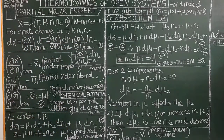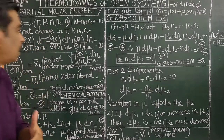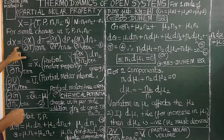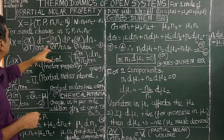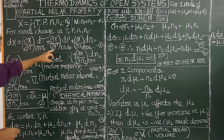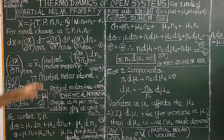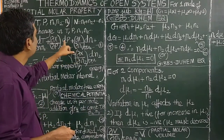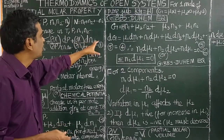The exact differential is written as: dX equals (∂X/∂T) at constant P, N1, N2 dT, plus (∂X/∂P) at constant T, N1, N2 dP, plus (∂X/∂N1) dN1, and so on.